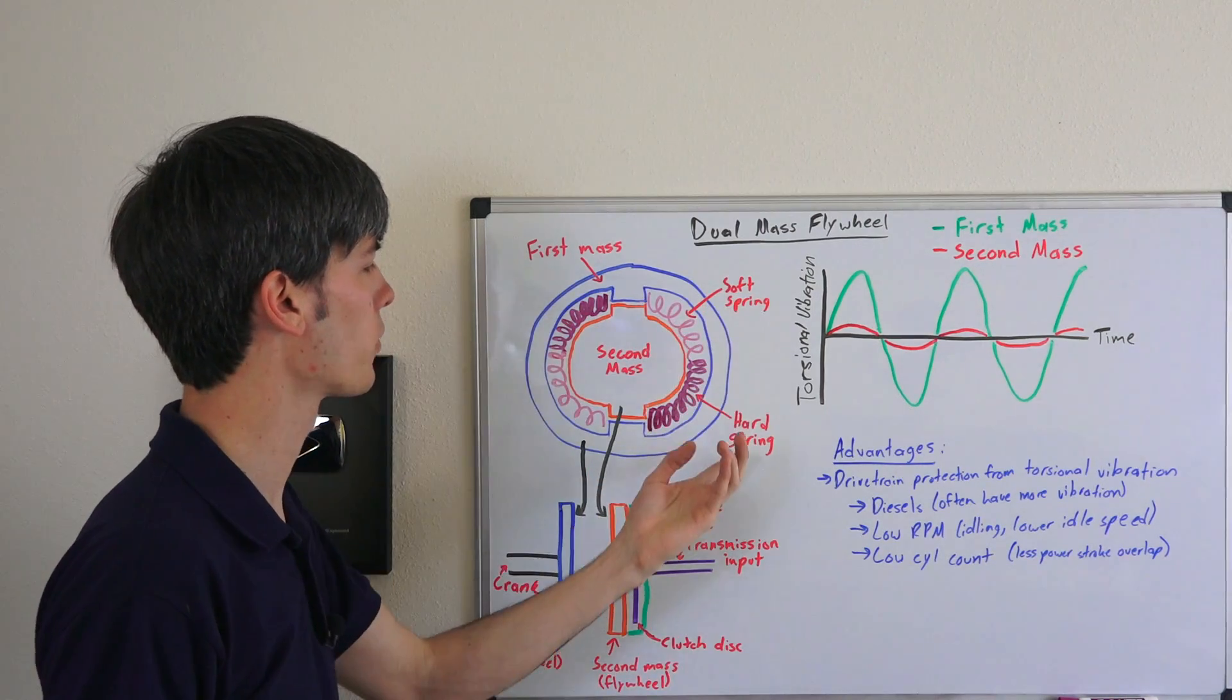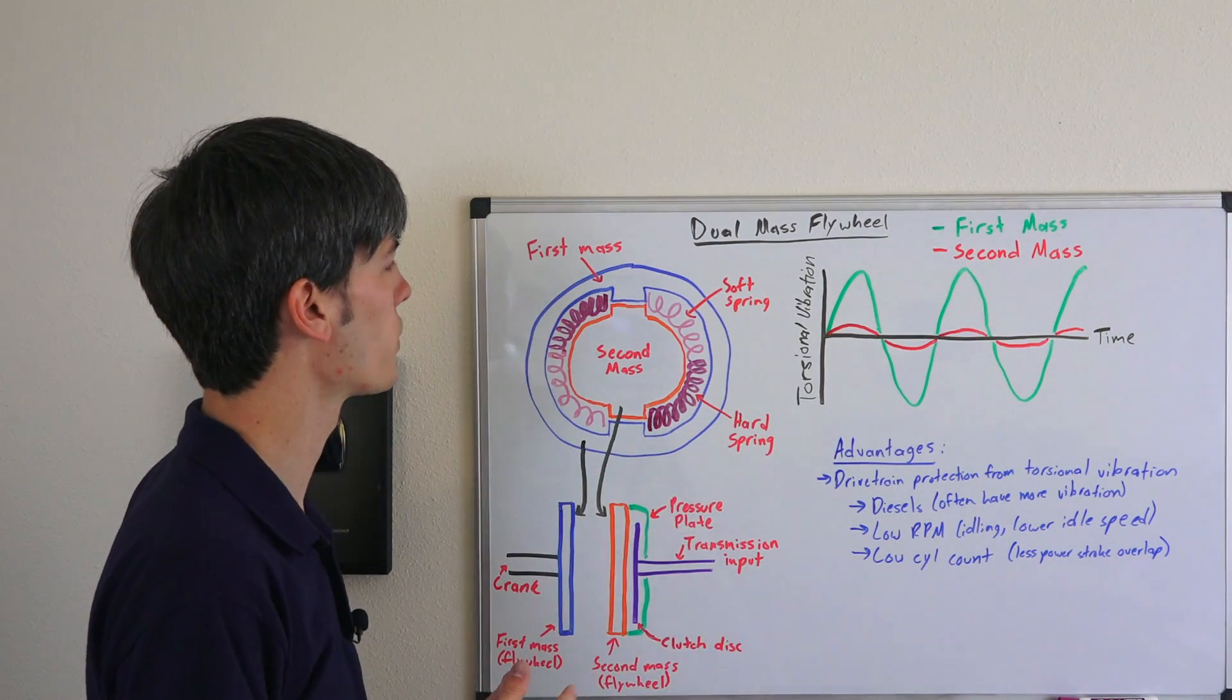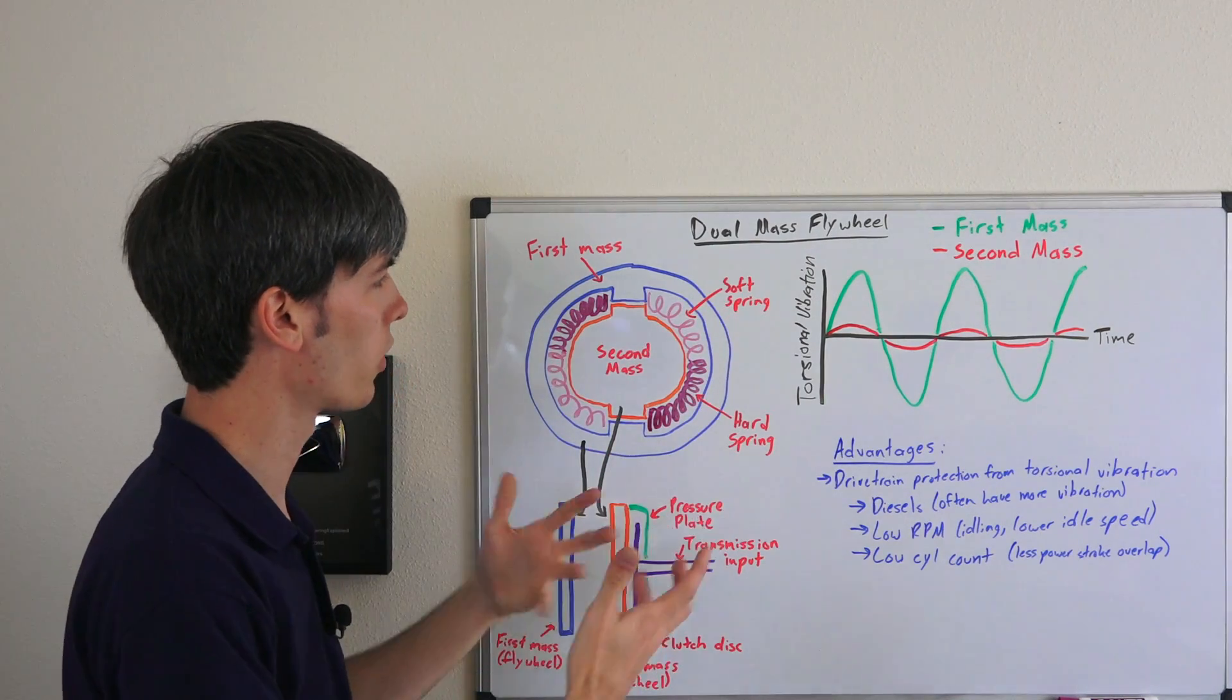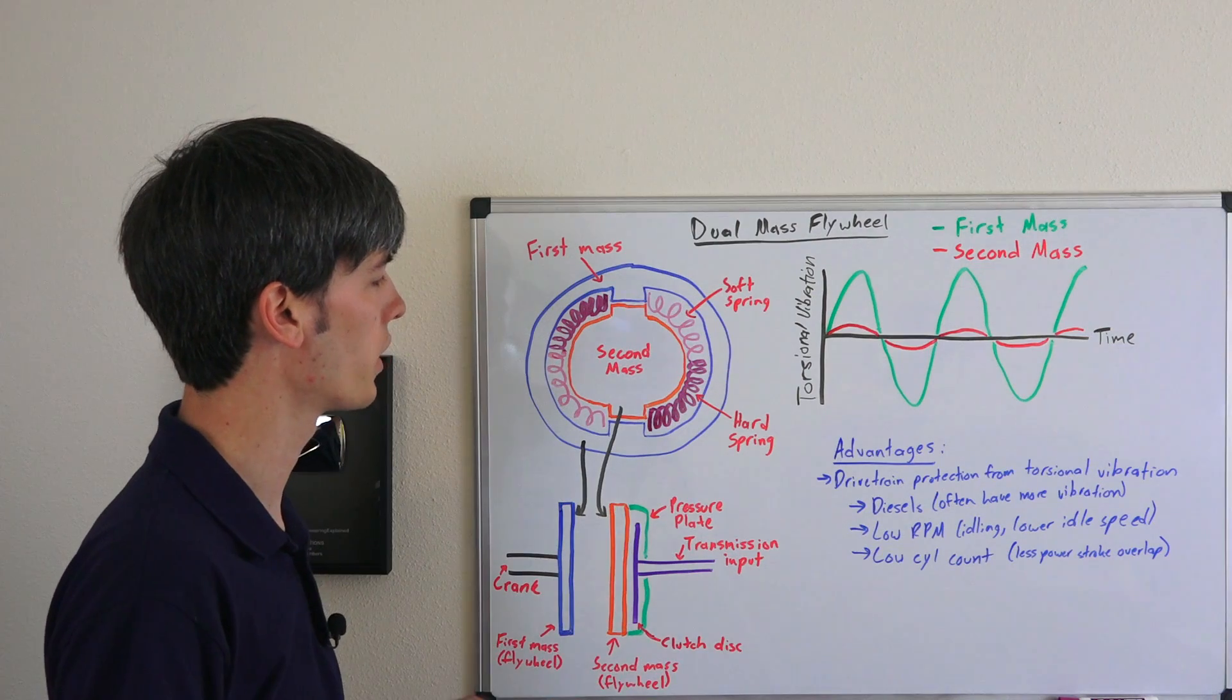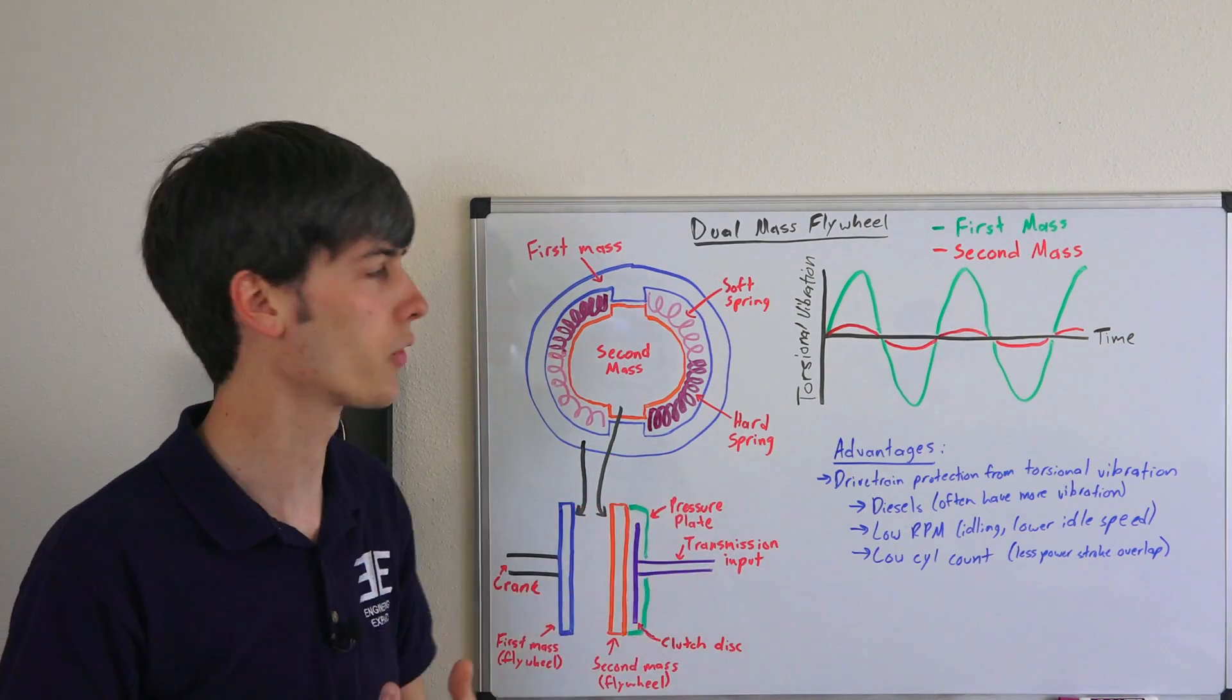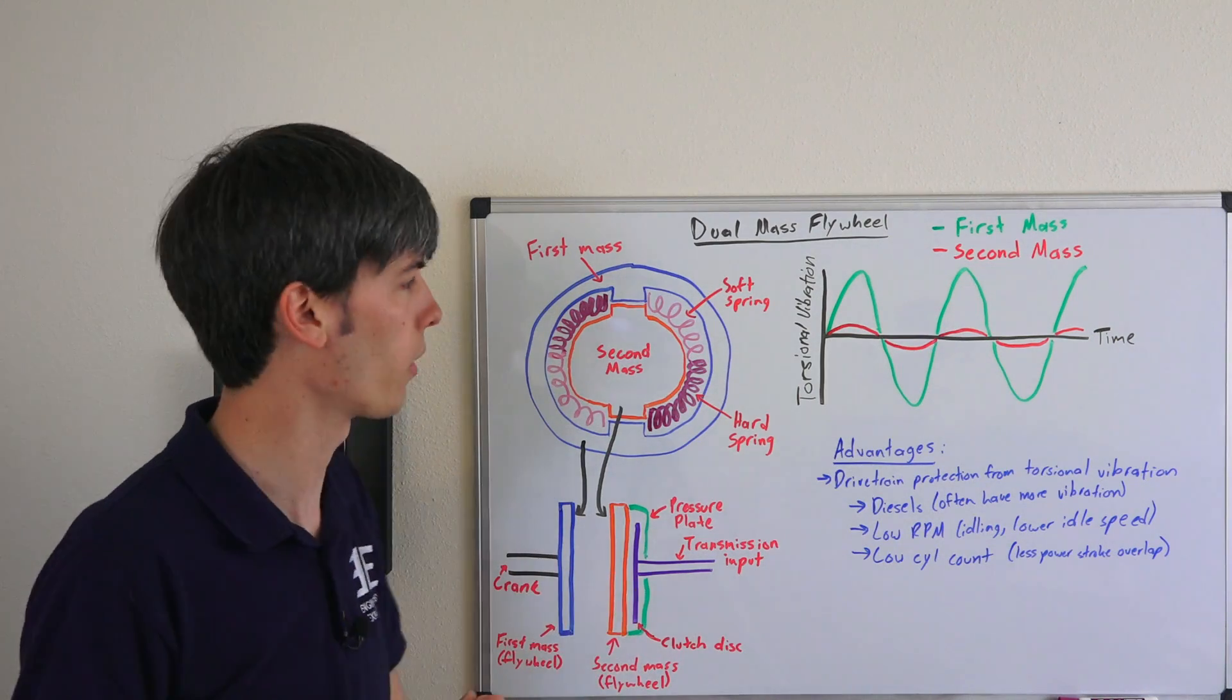You could have a soft spring and hard spring, or a combination of those. Basically the soft spring will be done for the lower torques and also like starting the engine to reduce that vibration, whereas the hard springs will be used for dampening out those higher torques when you're really matting down the throttle.